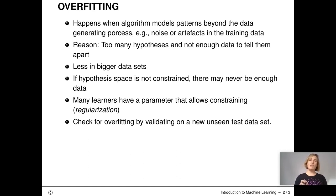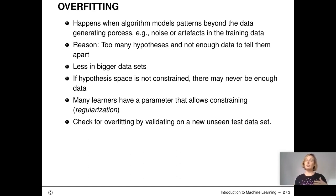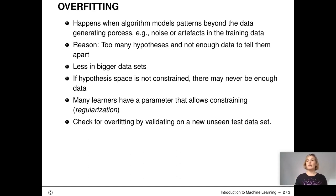There is also often a parameter in a machine learning model that allows you to constrain the learner. If you reduce the number of trees in a forest, this constrains the complexity of the forest. If you reduce the number of polynomial degrees in polynomial regression, you constrain the complexity of the model. And with that you reduce the chance of overfitting.